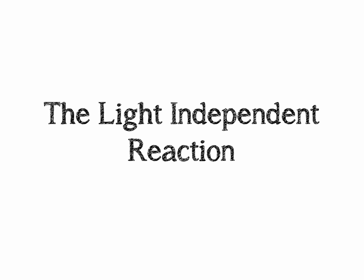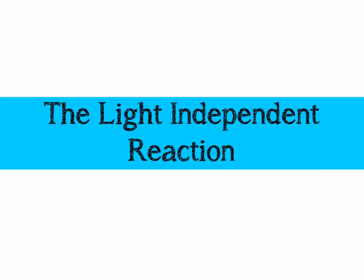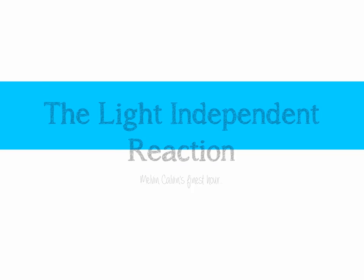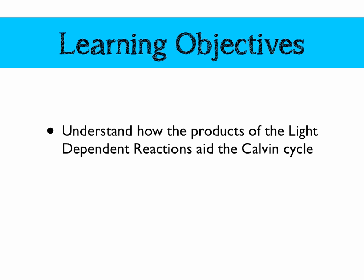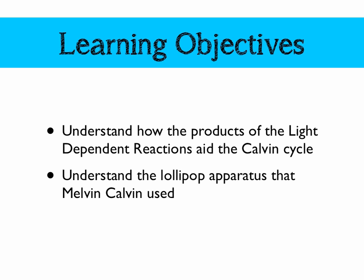Here's our next video on photosynthesis, and in this video we're going to be looking at the light-independent reaction — what I describe as Melvin Calvin's finest hour. Our learning objectives for today: we're going to understand how the products of the light-dependent reaction help the Calvin cycle, and look at the apparatus Calvin used to identify the intermediate compounds produced in the cycle that bears his name.